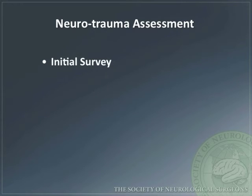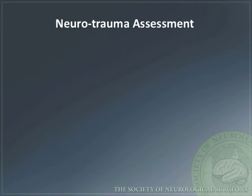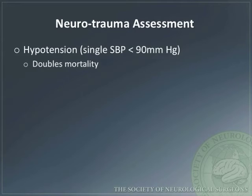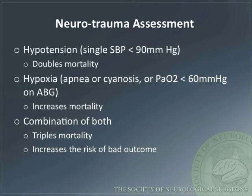Initial survey and assessment of a neurotrauma patient involves the standard ABCs, the Glasgow Coma Scale, pupillary function, and motor strength. The presence of hypotension in this patient population has been shown to double mortality. Hypoxia is another negative predictor of outcome, and the combination of both hypotension and hypoxia has been shown to triple mortality. Thus, neurotrauma patients should be aggressively resuscitated upon presentation.